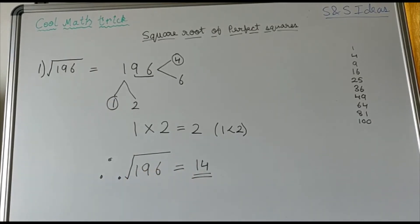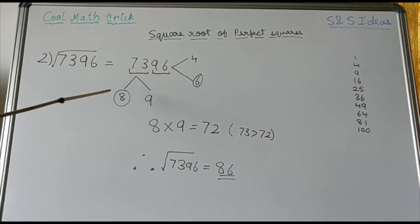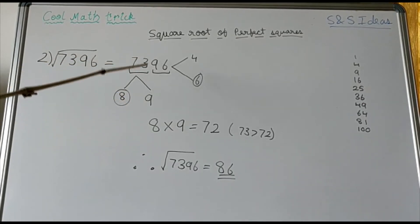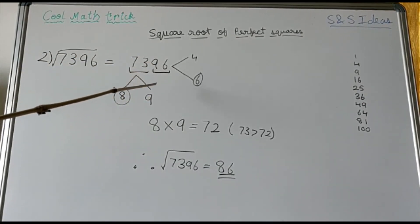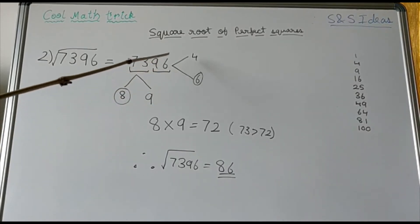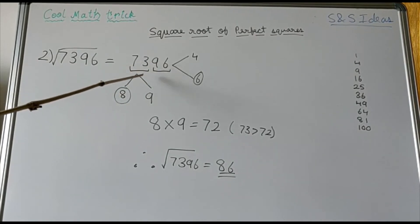Isn't it that easy? Now let us try with a bigger number. Here is our second number — it is the square root of 7396. So let us start by writing the number 7396.